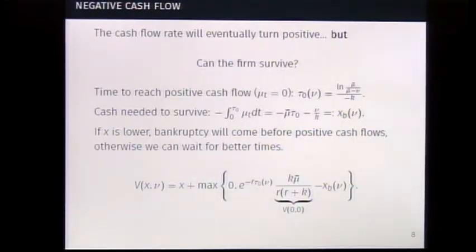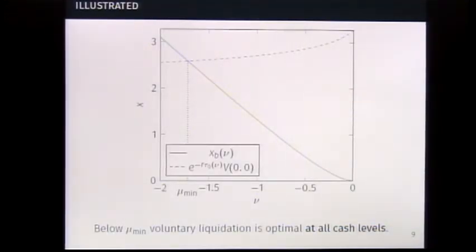Then there is no point waiting. We pay out everything we have. Take the money and run - voluntary liquidation. However, if it's not, we can wait. We get whatever value we have when mu is zero. That's the value we have if we have waited. Actually, we pay out the difference between X and XB. If we have XB, we're sure to survive, and then we wait for better times. So we have the value function.